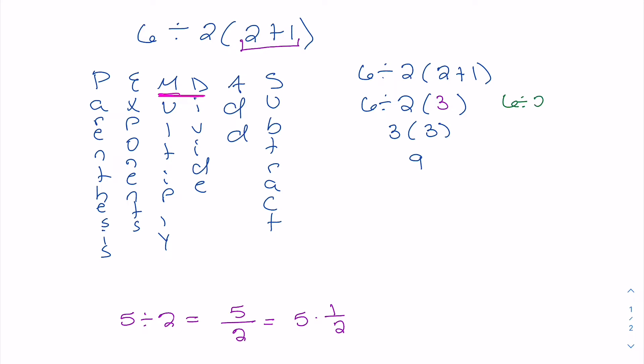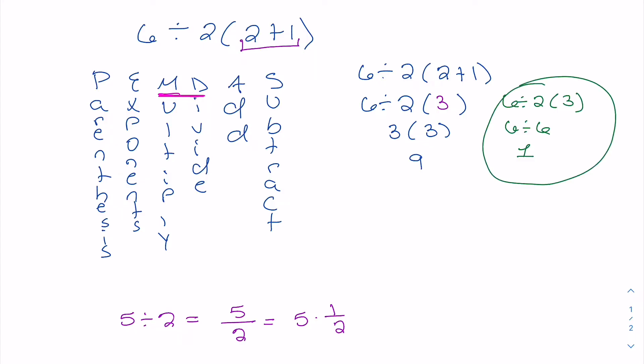Now what if we did the multiplying before the dividing? Let's look at that in green: if we did the multiplying first, we'd have 6 divided by 6, which is 1. This is where people are getting thrown off by their calculators. We only do that if we have brackets or parentheses around the 2 times 3, indicating we do that first. Since the original problem does not have that, we absolutely have to do the division before the multiplication. That goes back to dividing being multiplying by a fraction.